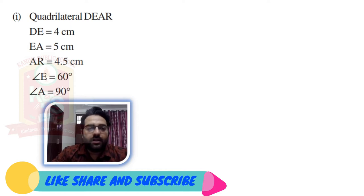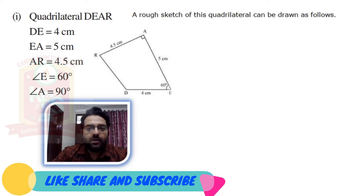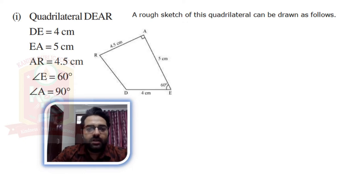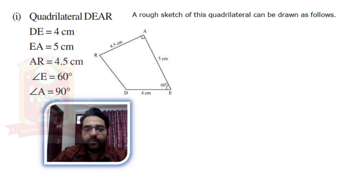First of all, we will create a rough sketch where DE = 4 cm, EA = 5 cm, RA = 4.5 cm, as you can see in the rough diagram. And angle E = 60 degrees, and angle A = 90 degrees, which is shown by the perpendicular sign.